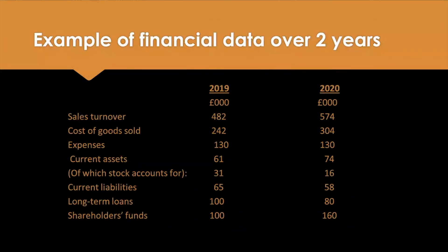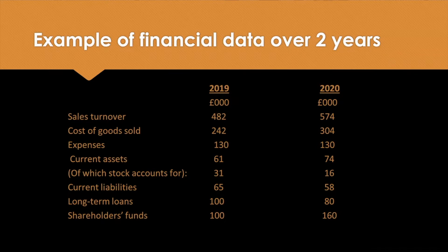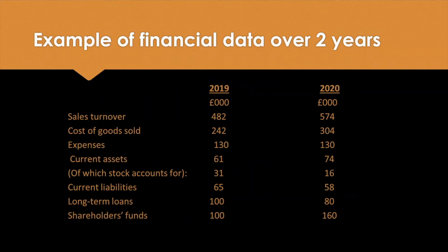I've just put up on the screen some examples of financial data over the last two years. You're covering things like the turnover - that's how much money an organisation has actually generated in revenue, shown in millions, so the 2009 data is 482 million. You've got the cost of goods sold, which are your direct costs, and then the expenses which are your indirect costs - the overheads and running costs. Other data includes assets, both current and stock, fixed assets and current assets, then liabilities - current short-term ones and long-term ones - and shareholder funds.